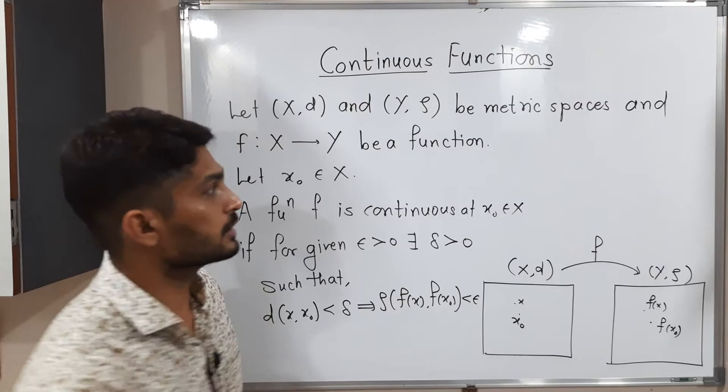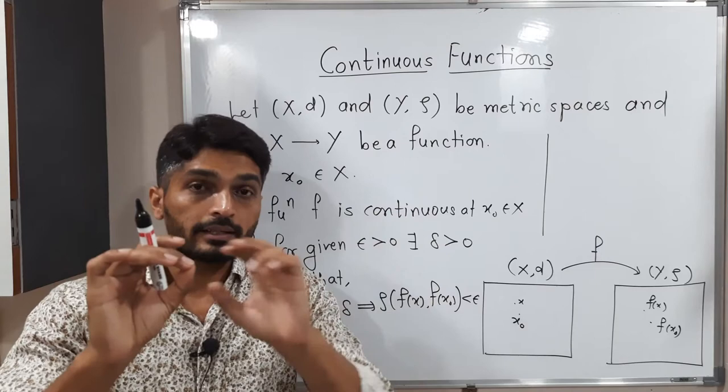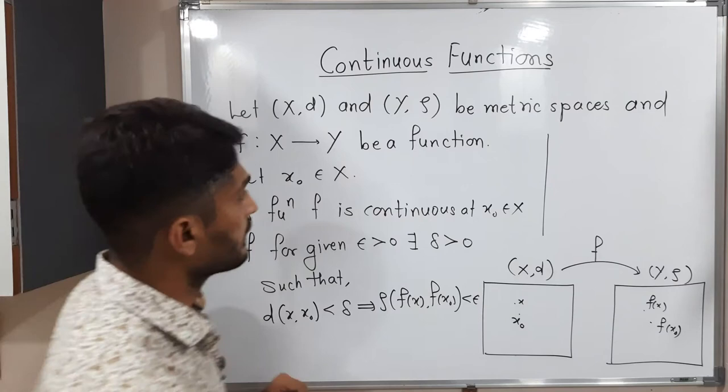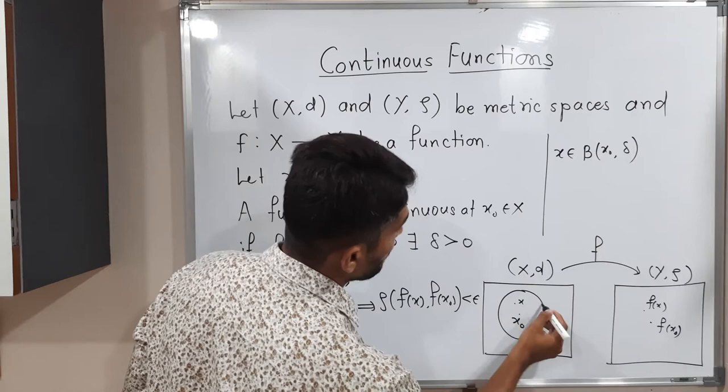Distance between x and x₀ less than delta means: if the distance of any point from the center of a ball is less than the radius, then that point lies inside the ball. So we can equivalently write that x belongs to the open ball with center x₀ and radius delta in metric space (X, d).